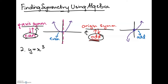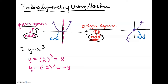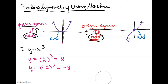Now let's apply the same method to y = x³. Substitute positive 2: 2³ = positive 8. Substitute negative 2: (-2)³ = negative 8, because multiplying negative 2 three times leaves one remaining negative, giving -8. So we get positive 8 and negative 8 — they're the same number but opposite signs, meaning they're different values.